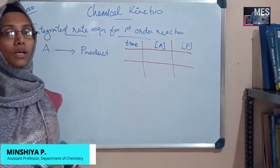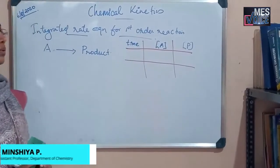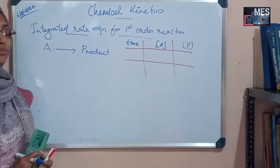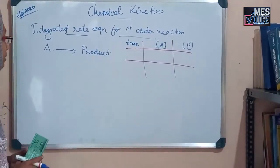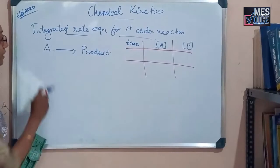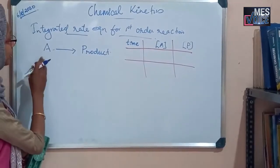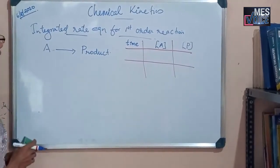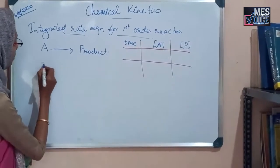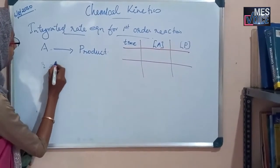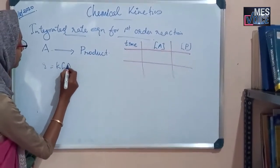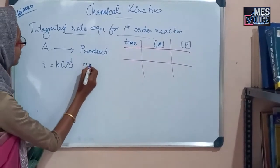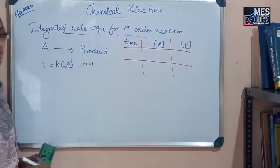Hello students, welcome to the class. Today I am going to discuss the integrated rate equation for first order reaction. Once we have a reaction in which reactant A is converted into product, if it is a first order reaction, the rate is equal to K into the concentration to the power 1. This N is equal to 1 — it is a first order reaction.